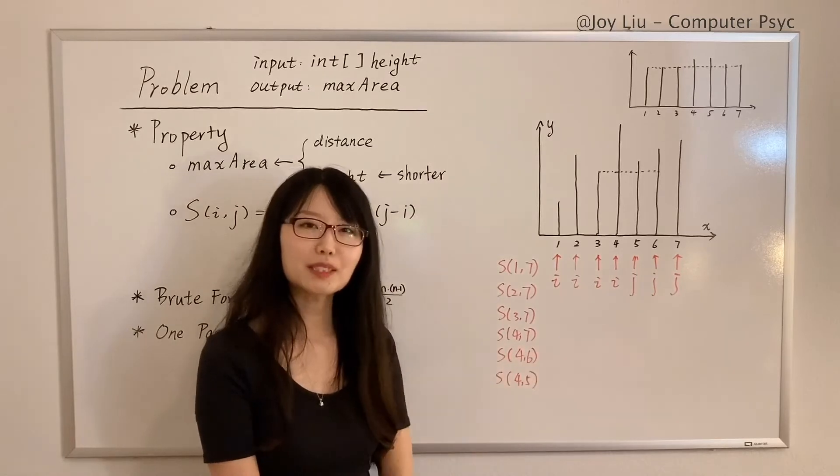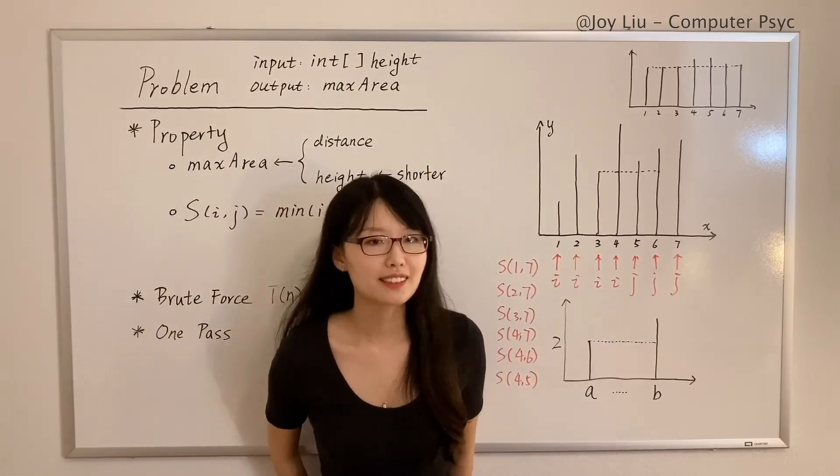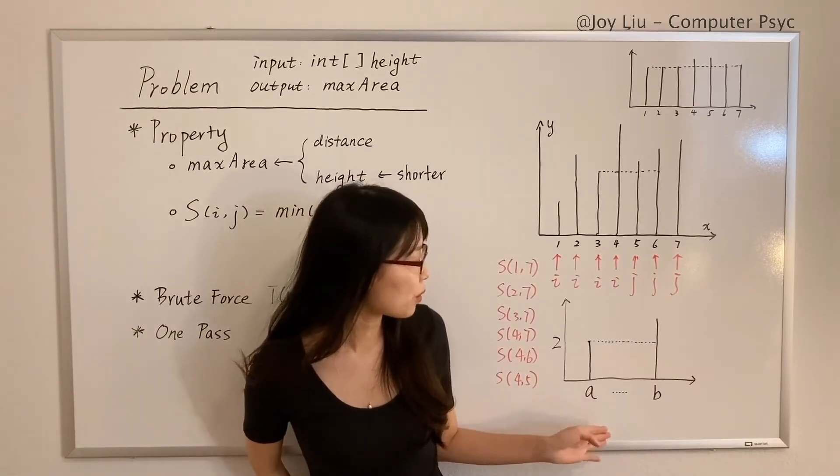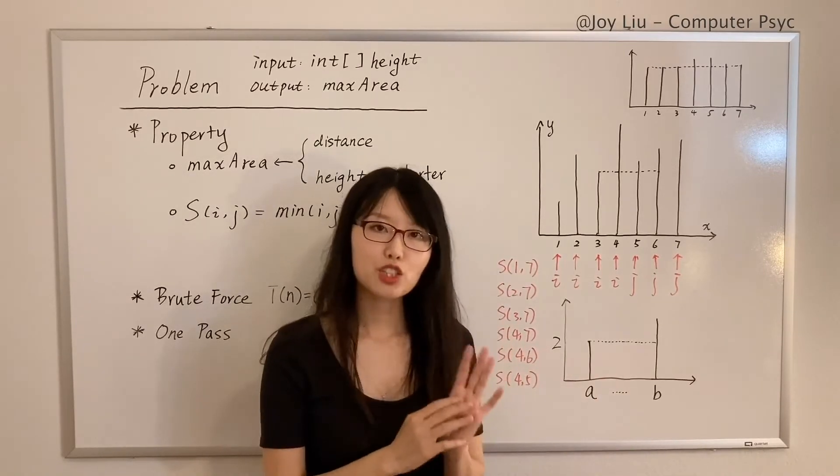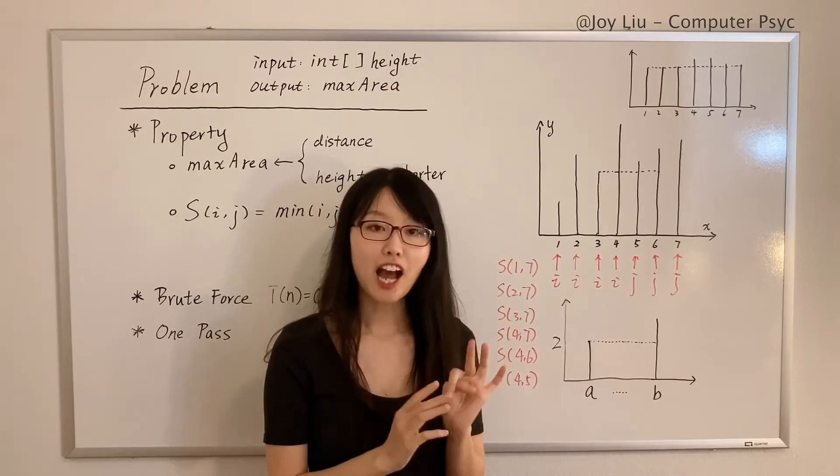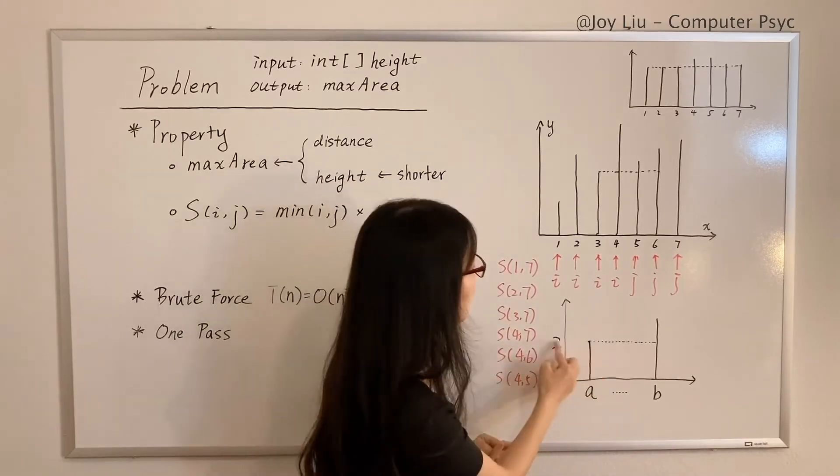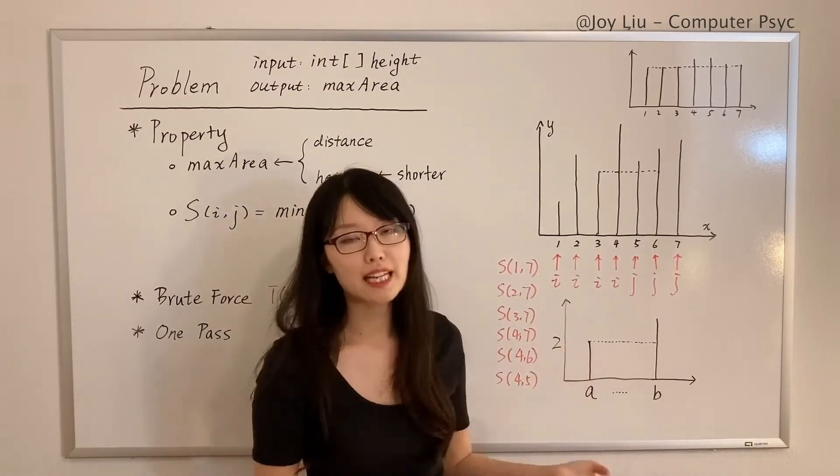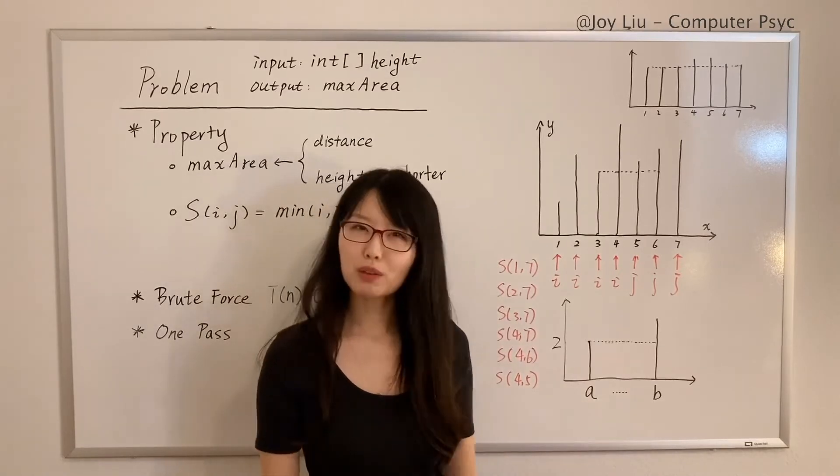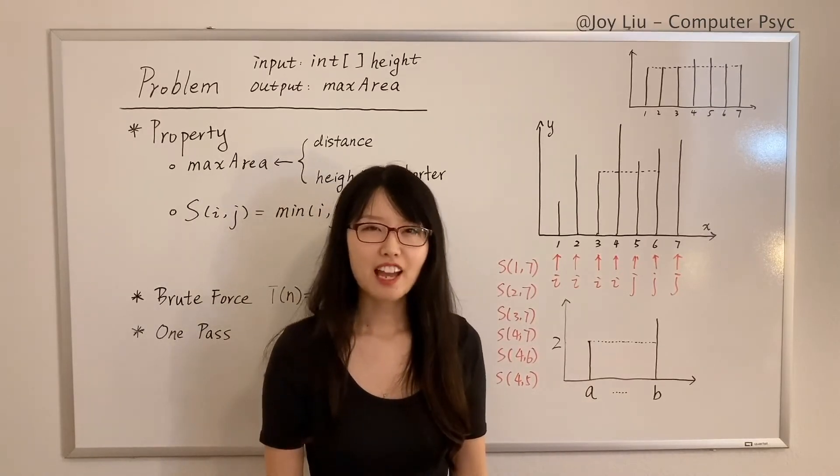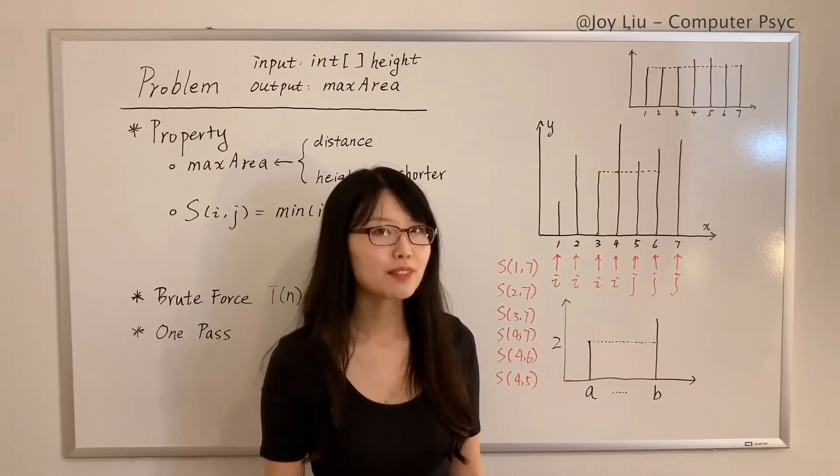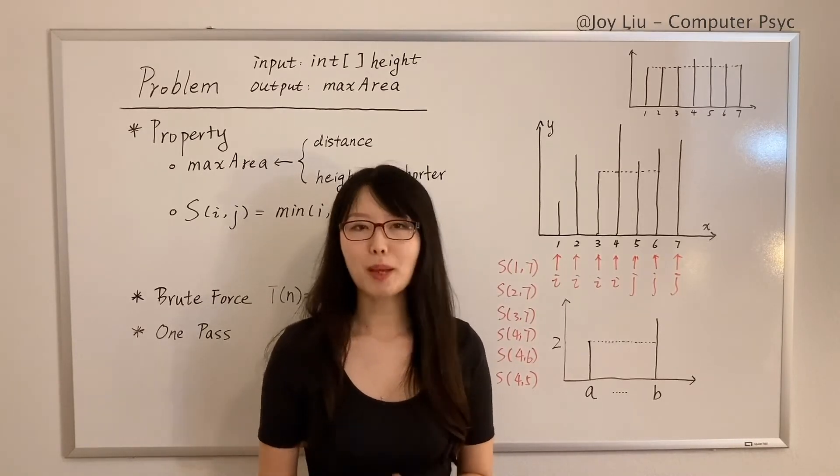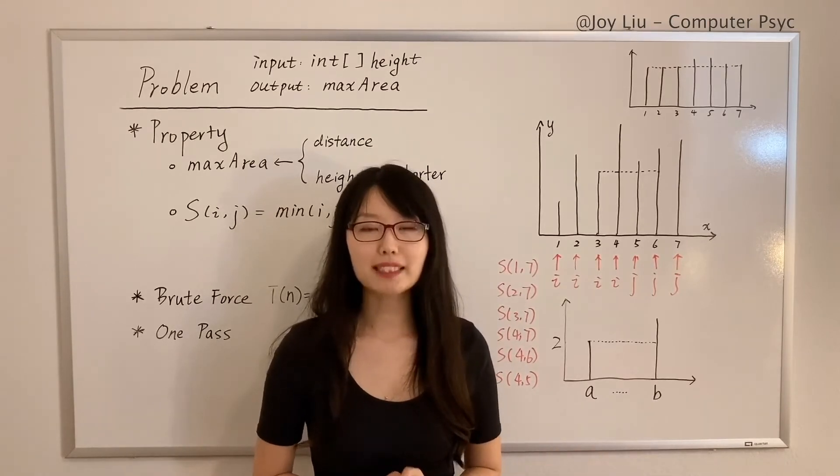And we stop when two pointers meet, like here. So now we have calculated these containers, and we pick the max. Why does it work? Okay, so let's take this container for example—container (a,b). We know that first, a is shorter than b, and second, the height of this container is two, decided by a.